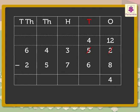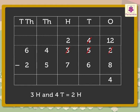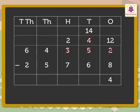Subtract the tens. That is, 4 minus 6. As the tens are not enough, we regroup the hundreds. Here, 3 hundreds and 4 tens is equal to 2 hundreds and 14 tens. Therefore, 14 minus 6 is equal to 8 tens.